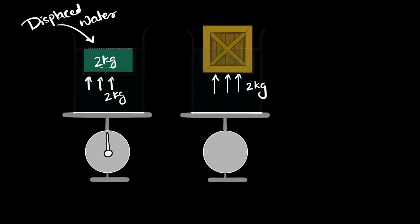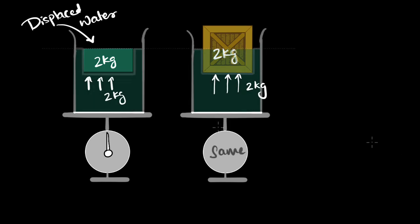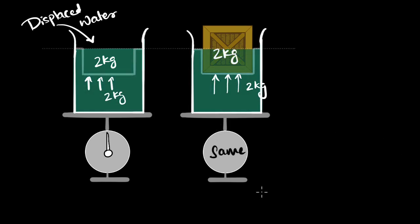We know that this displaced water is two kilograms, and it's being pushed up with two kilograms. So what should be the weight of the box? Well, just like with the displaced water, this box is also in equilibrium — it's just staying there. Therefore, this box should also weigh two kilograms. The two beakers should weigh exactly the same.